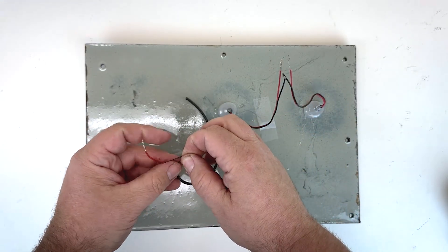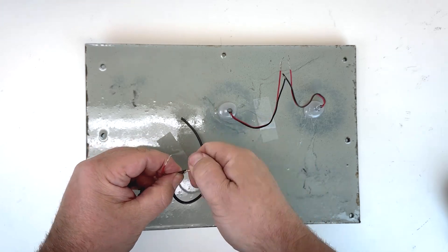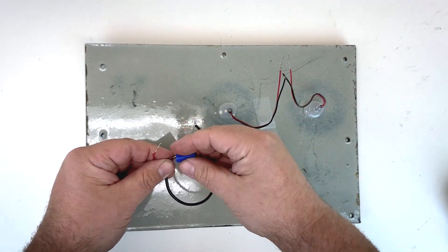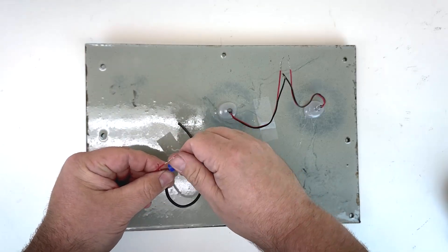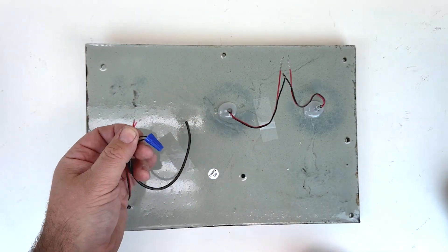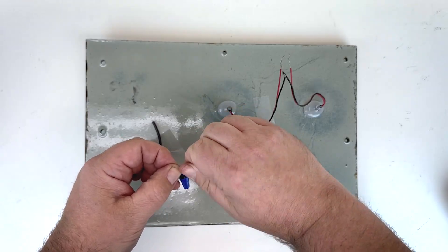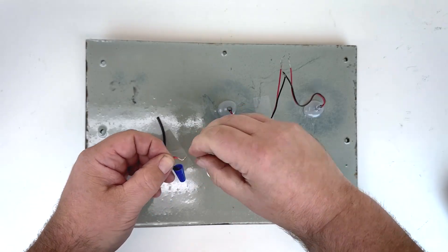So I'm just going to take my black to the black of the LED, twist them together, and then I'm going to use a wire nut to secure that. And then I'm going to do the same thing for the red positive wires. Just twist those together and put a wire nut on.